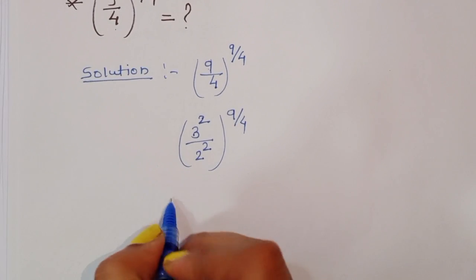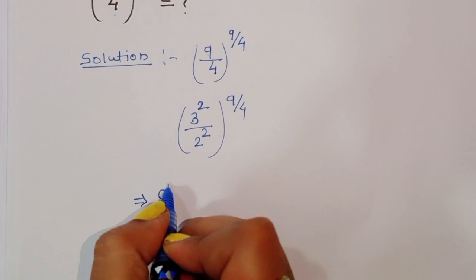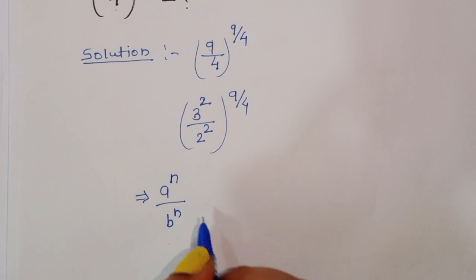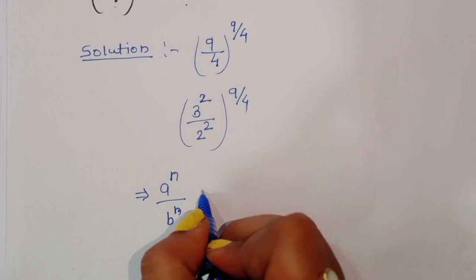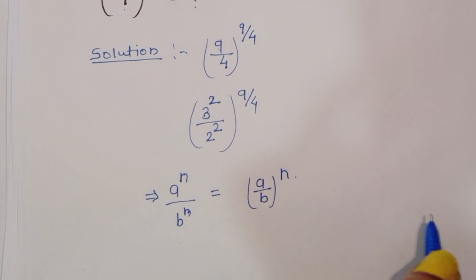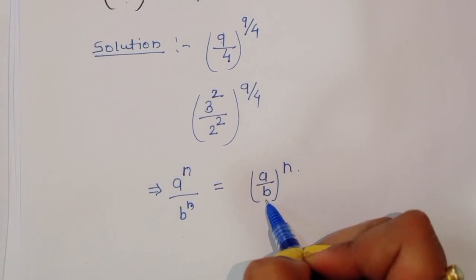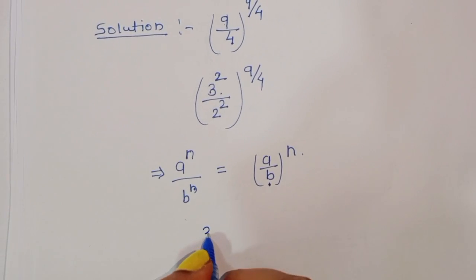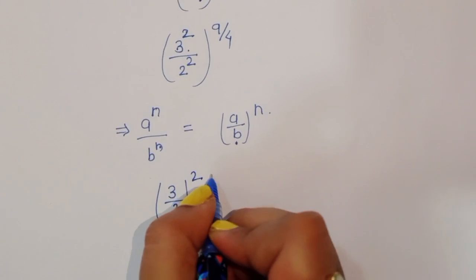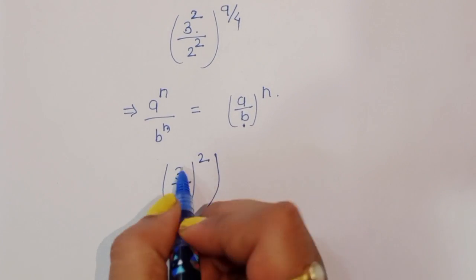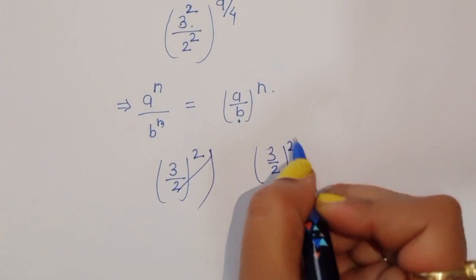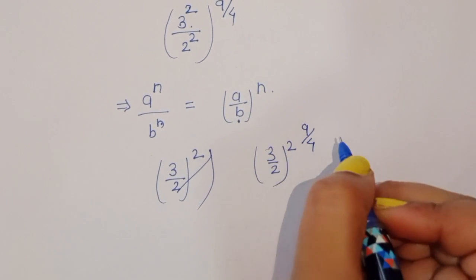We know the formula: a power n divided by b power n — when the power is the same — can be written as (a divided by b) power n. Using this formula, we get (3 divided by 2) raised to the power 2, then that whole thing raised to the power 9 over 4.